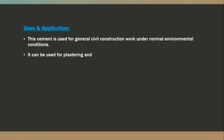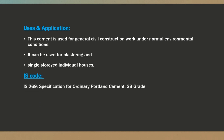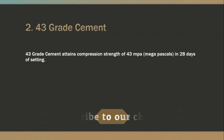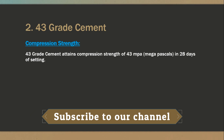33 grade cement can be used for plastering and single-storey individual houses. The code we have to follow is IS 269 for 33 grade of cement.